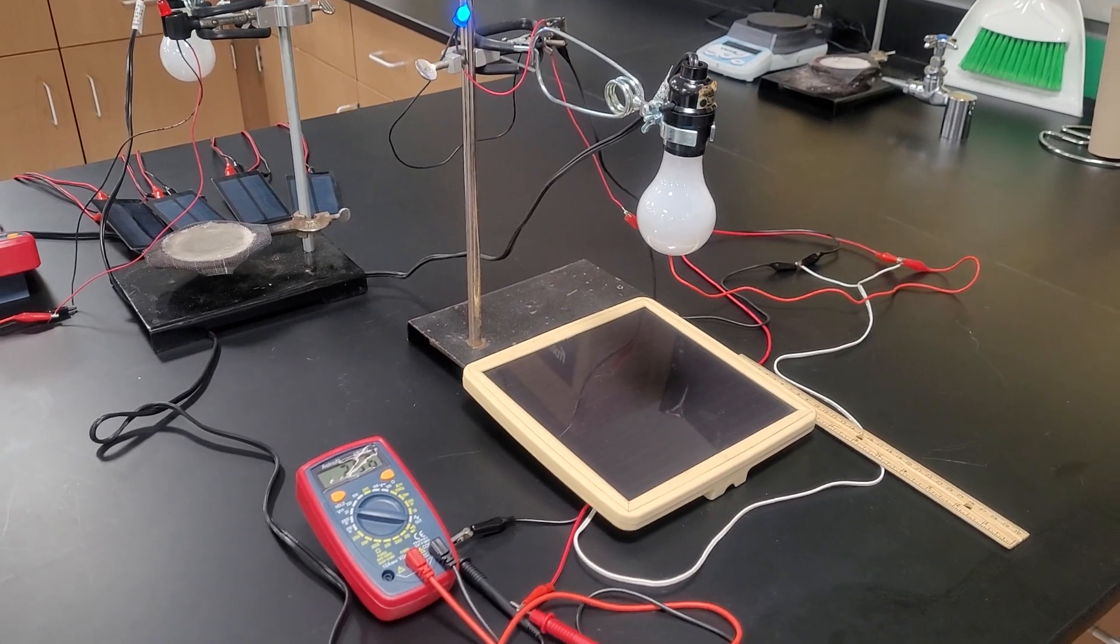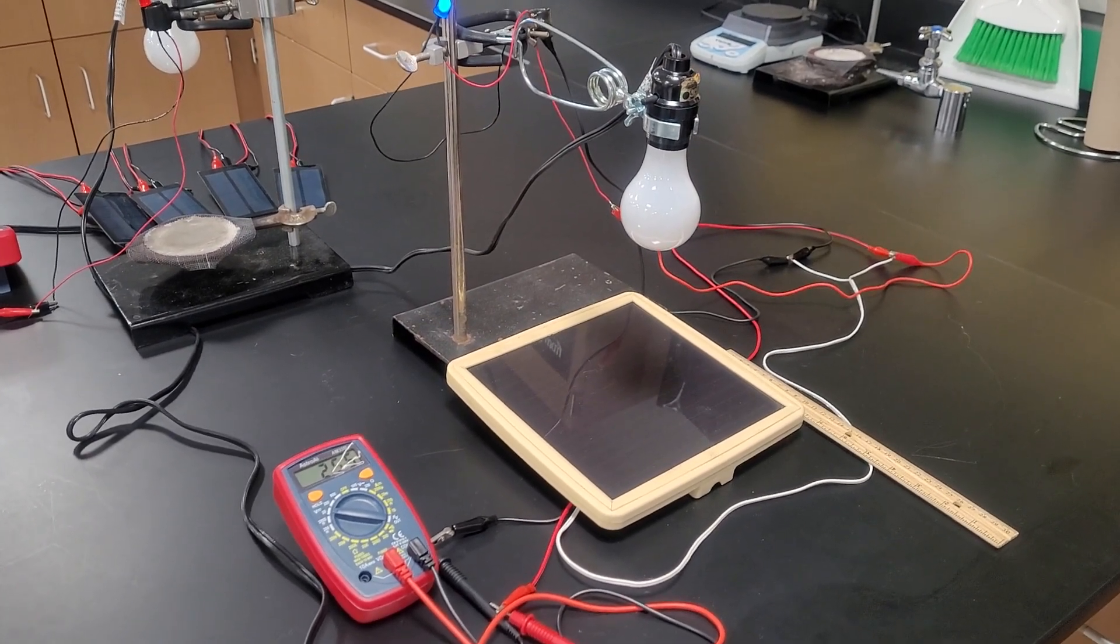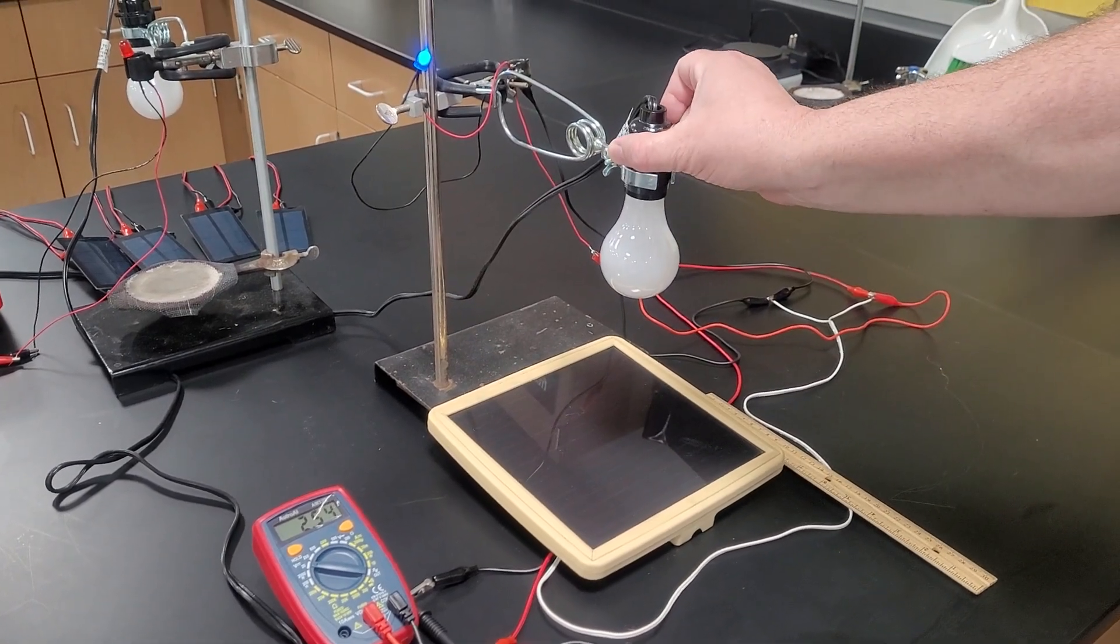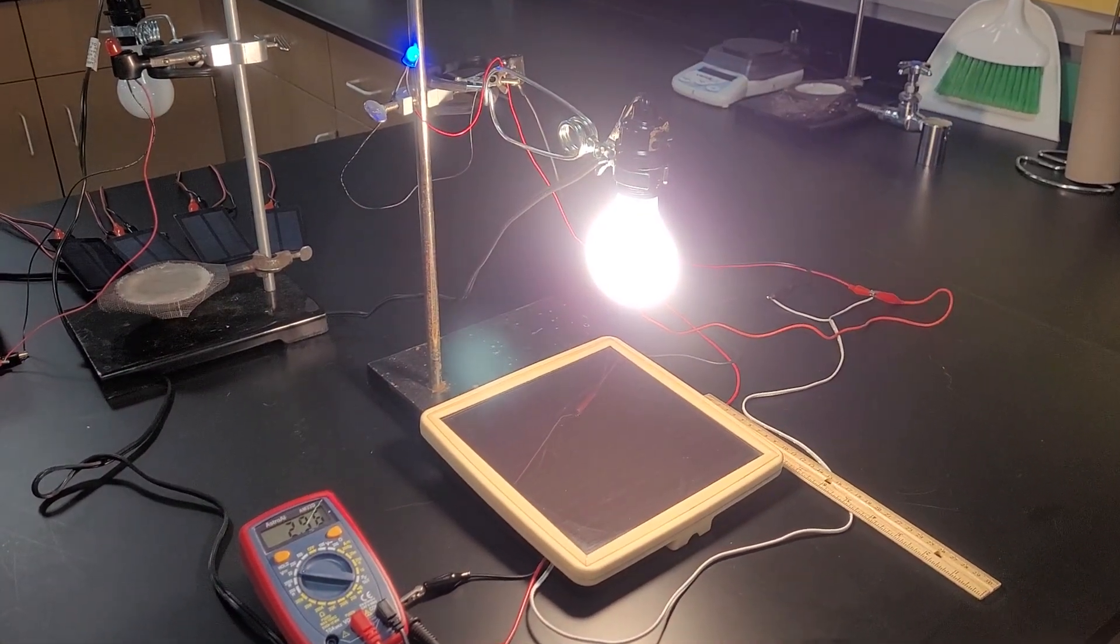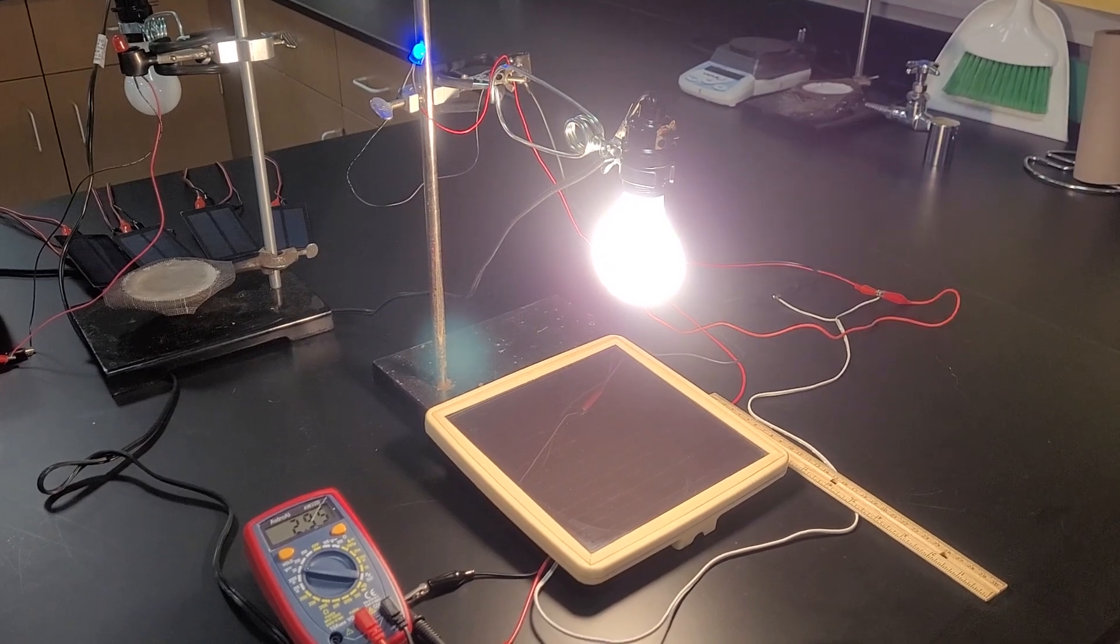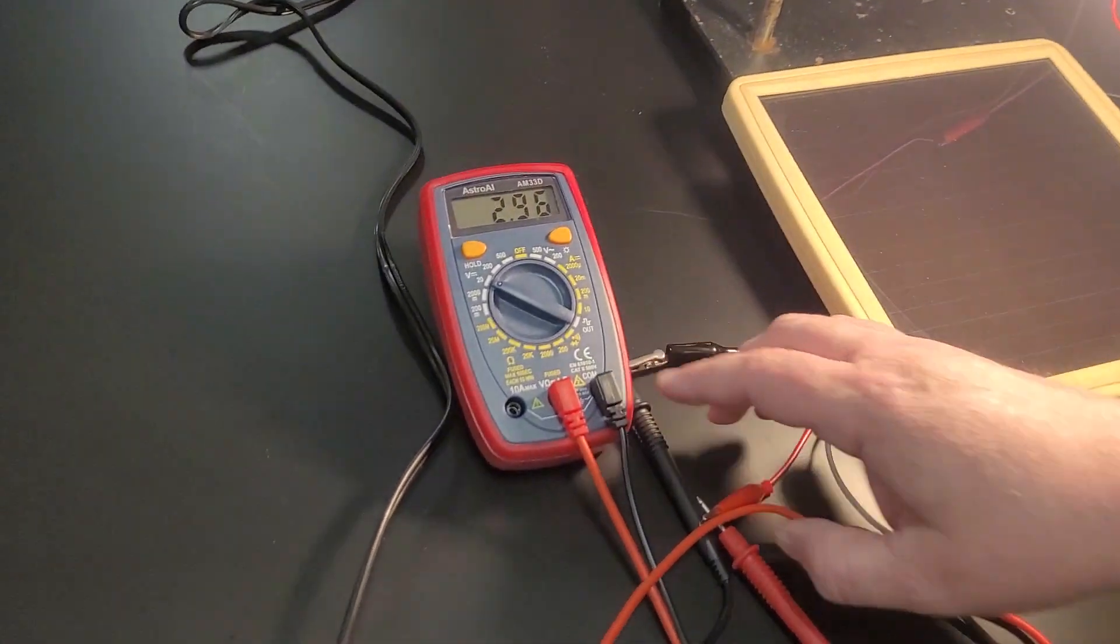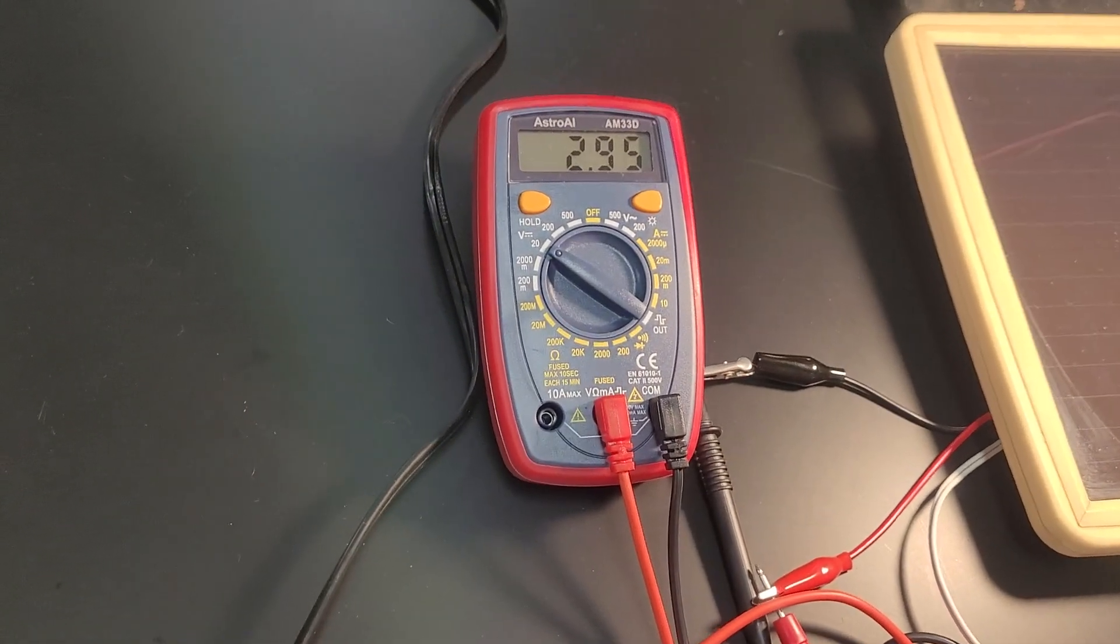The second thing we want to do is say okay what if we change the conditions and add more light? What happens to our voltage? So we're going to turn on our light and if you notice now we still have the blue LED light. It seems as though it's shining a little bit brighter but now we're generating 2.96 volts of electricity with our light on.